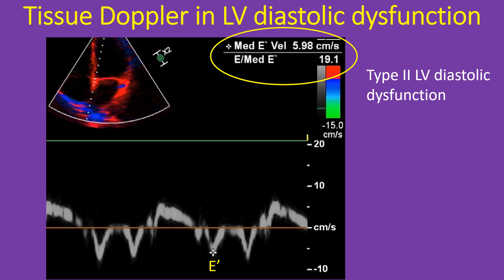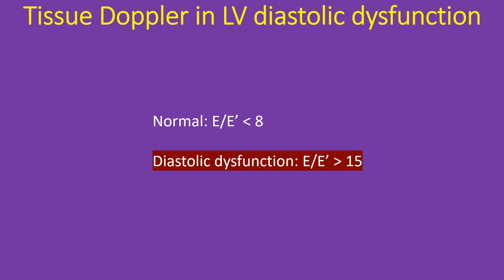E wave is measured prior to tissue Doppler imaging and stored so that the software application displays the E by E prime as soon as the E prime is measured. E by E prime below 8 is considered normal, while a ratio above 15 is considered a feature of left ventricular diastolic dysfunction. E by E prime has been correlated with left atrial pressure, which is the left ventricular filling pressure that increases in diastolic dysfunction. Estimation of pulmonary capillary wedge pressure from E by E prime on tissue Doppler was covered in another video on this channel.